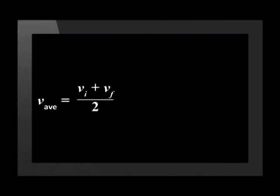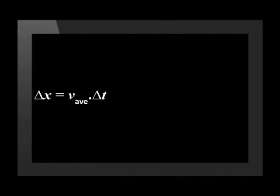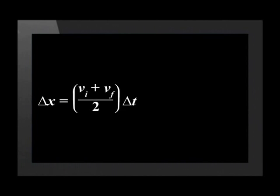We use the equation for average velocity to develop the fourth equation of motion. The average velocity equals (v_i plus v_f) divided by 2. We also know that delta x equals average velocity multiplied by delta t. Combining these, the displacement delta x equals (v_i plus v_f) divided by 2, times delta t.